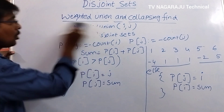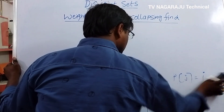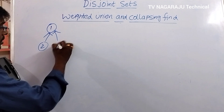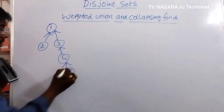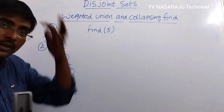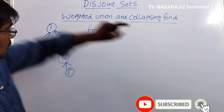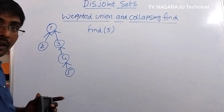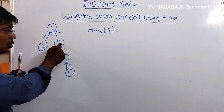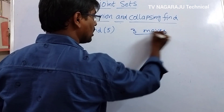Now we move into collapsing find. What is the reason for collapsing? Assume a tree like 1 → 2 → 3 → 4 → 5 (a chain). If you want to perform find(5) to get the set representative (the root), you need 3 moves: 5 to 4, 4 to 3 (one move), 3 to 1 — a total of 3 moves are required.